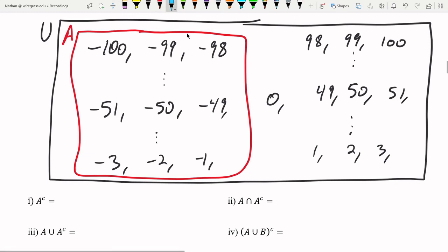And set B was the numbers negative 50 to positive 50. So in blue, that's going to be this set. This is B.